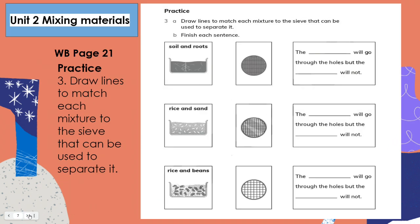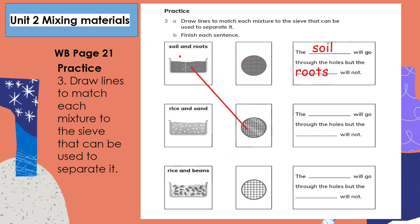Workbook page 21, practice. Draw lines to match each mixture to the sieve that can be used to separate it, then finish each sentence: the blank will go through the holes but the blank will not. The soil will go through the holes but the roots will not, because the soil is smaller and finer than the roots so they will be able to go through the holes. The roots are much bigger and thicker and will get caught in the holes.